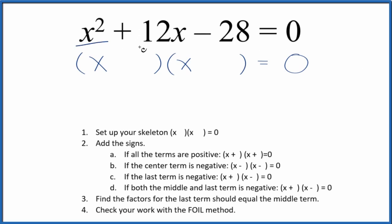Let's look at the equation x squared plus 12x minus 28. The first thing we need to do is set up a skeleton. This is our skeleton right here. Once we do that, we can add the signs to our skeleton. I can see I have a positive and a negative here, so if the last term is negative, we're going to put a positive and negative in our skeleton like this.